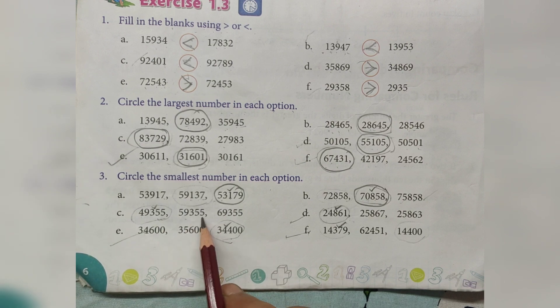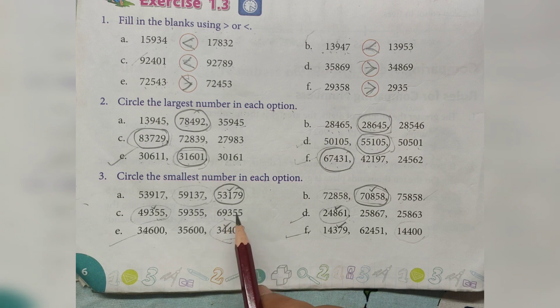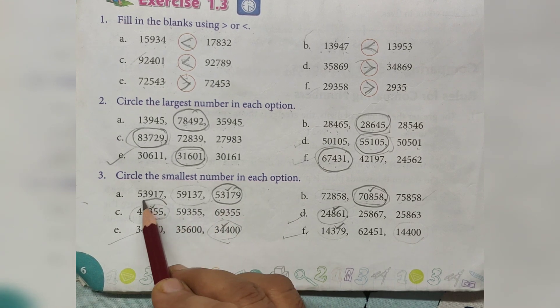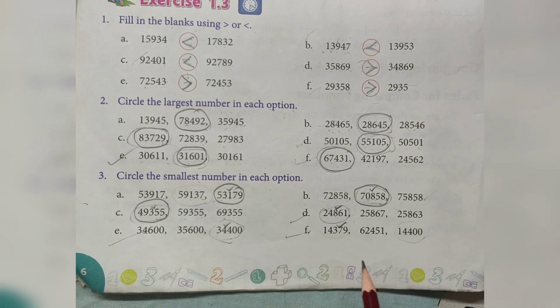49,355, 59,355, 69,355. Which is smallest number? 49,355.